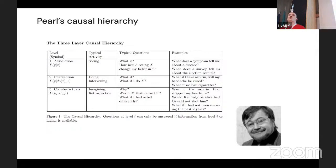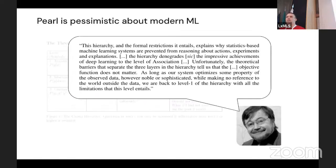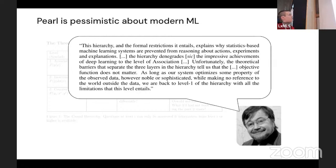Building on this framework, Pearl introduced the causal hierarchy. At the bottom level you have correlational or associational knowledge — how things inter-relate in purely observational data. The second level is intervention, where you actually do interventions on the world. The third level is counterfactuals. Because of this hierarchy, Pearl has expressed skepticism about modern machine learning. A quote from one of his papers: 'This hierarchy and the formal restrictions it entails explains why statistics-based machine learning systems are prevented from reasoning about actions, experiments, and explanations,' essentially denigrating deep learning to the level of mere association.